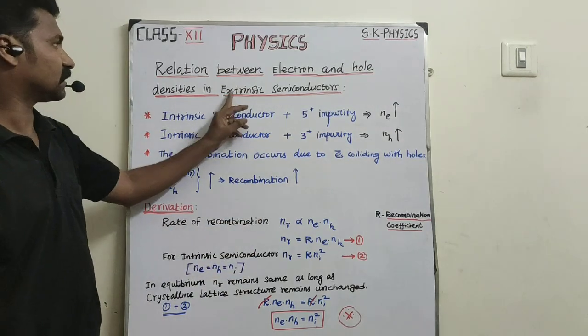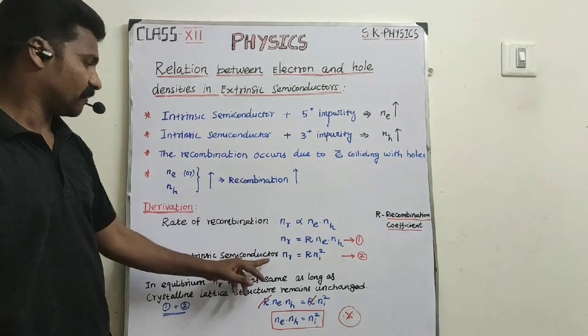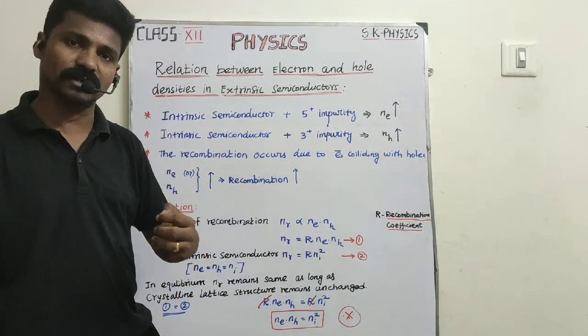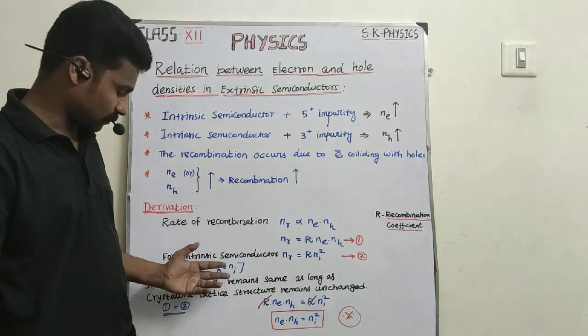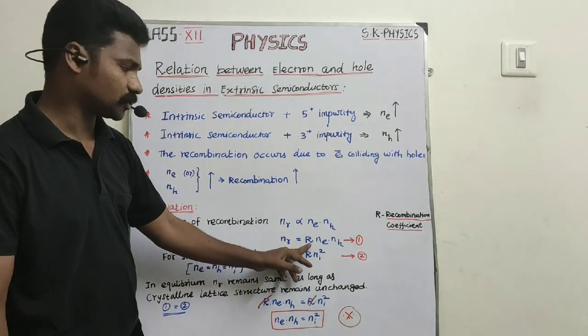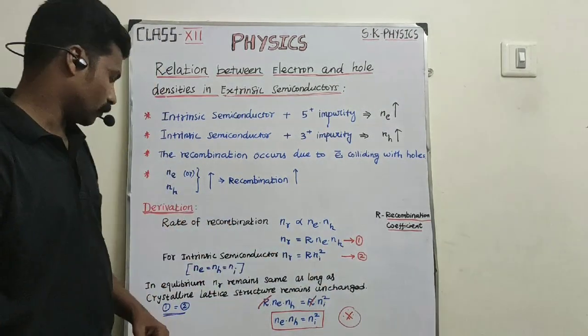This is for extrinsic semiconductors. In the case of intrinsic semiconductors, the number of electrons or number of holes should be the same. So I can take it as Ni. Therefore, r into Ni into Ni, we can write as r into Ni square - that is equation number 2.